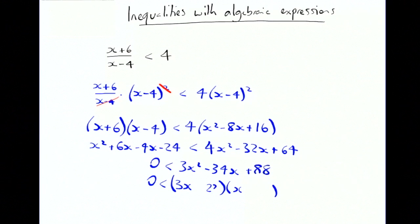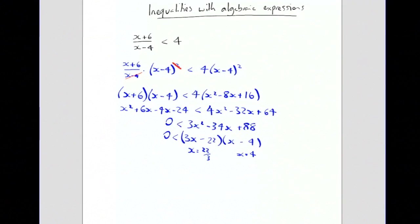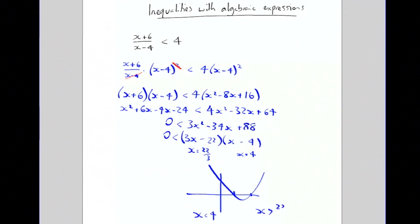Factorising, you get 3x minus 22 times x minus 4, where 88 is split into 22 and 4, and both signs have to be negative. That tells us that x equals 22 over 3, which is just over 7, and x equals 4. Drawing a quick sketch, remembering the smaller root is 4 and the bigger one is 22 over 3, we're looking for when the expression is greater than 0 — that's the bits on the ends, the wings. So the answer is x is less than 4, and also x is greater than 22 over 3.